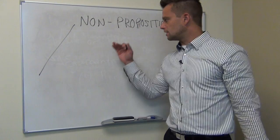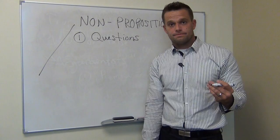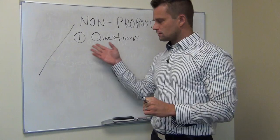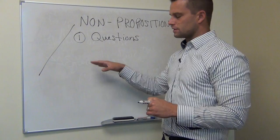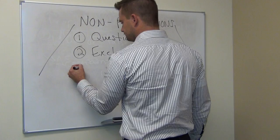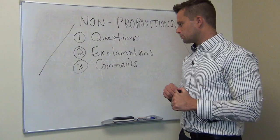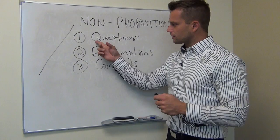I'm going to make a genus-species diagram here. Everything that falls within these two angled lines is going to be an example of a non-proposition. There are three we're going to focus on in this course. The first is questions, the second are exclamations, and the third are commands.